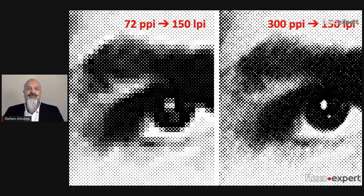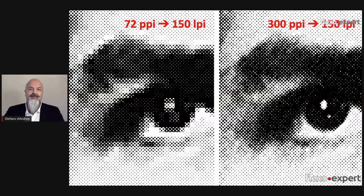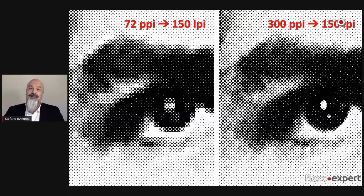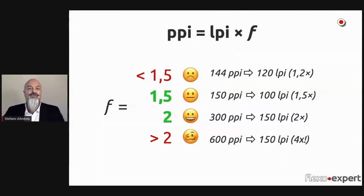Okay, I understand that 72 is low and 300 is okay, but how can I calculate the correct value? You know, image resolution is connected to printing line screen with a factor. That factor should be at least 1.5, or better, 2.